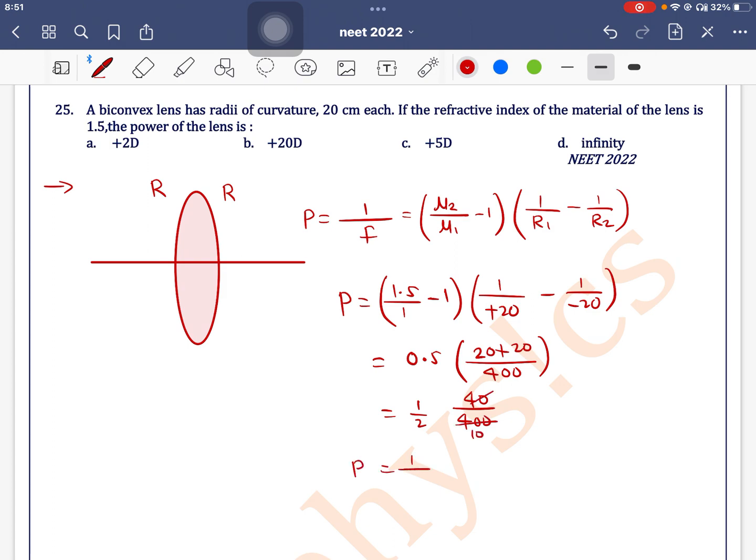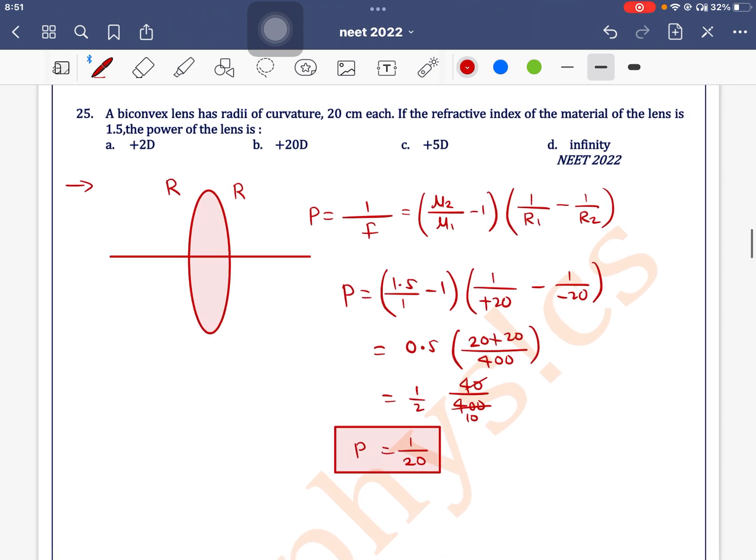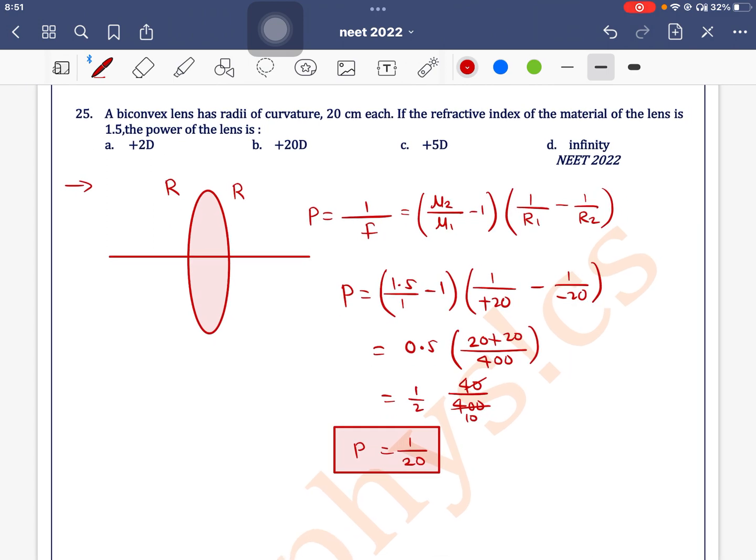Power is equal to 1 by 20. Actually, I will solve for focal length, not power. This is 1 by f, so focal length is equal to 20 centimeter.